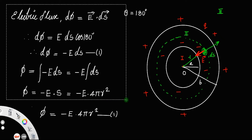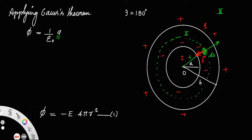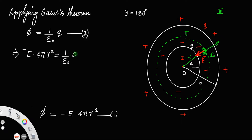Applying Gauss's theorem, the flux Φ = (1/ε₀) × q. Inside this Gaussian surface, the magnitude of the charge is q. Equating the two expressions: −E × 4πr² = q/ε₀, which gives E = −(1/4πε₀) × (q/r²). This is equation number 3.